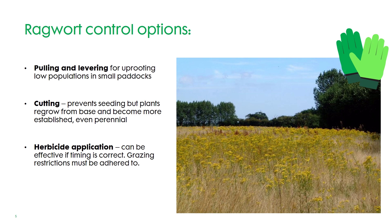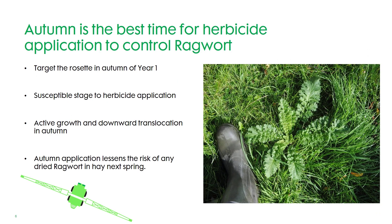The third option is herbicide application, which can be very effective but needs to be applied at the right time, and you need to be very aware of the grazing restrictions around herbicide application. Autumn is the best time of year for herbicide application for ragwort. We're targeting the rosettes — this is the most susceptible stage of the weed. In late August and September the rosettes are actively growing and translocating downwards into the roots, giving very good control — much better than in the colder conditions of April. The other advantage of treating ragwort in the autumn is it lessens the risk of any dead and dried ragwort being in the hay or silage next spring.